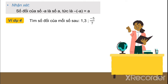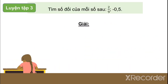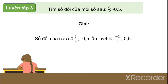Nhận xét: Số đối của số âm A sẽ là A, tức là trừ của trừ A bằng A. Ví dụ 4: Tìm số đối của mỗi số sau. Số đối của 1,3 là âm 1,3; số đối của âm 5 phần 7 là 5 phần 7. Tìm số đối của 2 phần 9 và âm 0,5: ta sẽ được là âm 2 phần 9 và 0,5.